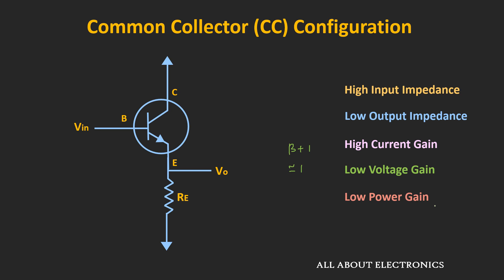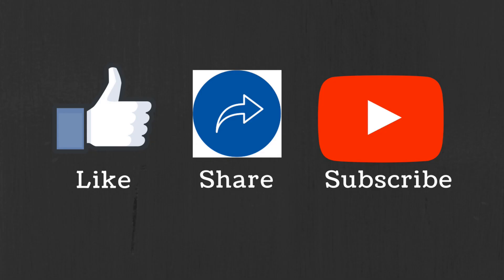We will see in detail about all these properties during the small-signal analysis of the BJT. I hope in this video you understood the basics of the common collector configuration. If you have any question or suggestion, do let me know in the comment section below. If you like this video, hit the like button and subscribe to the channel for more such videos.